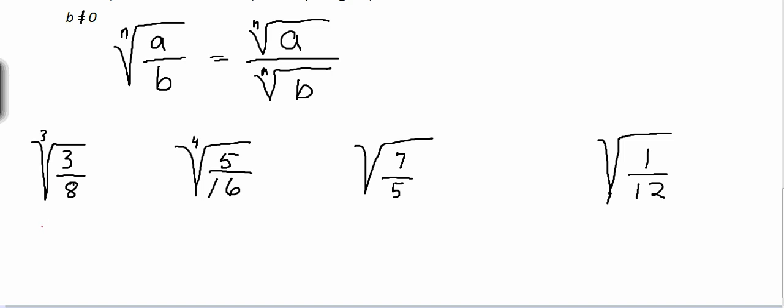So after simplifying the cube root of 3 over 8, we break our radical: cube root of 3 over the cube root of 8. And I know the cube root of 8 at this point is equal to 2. So my radical simplified is the cube root of 3 over 2.